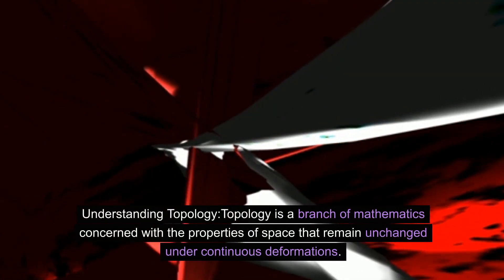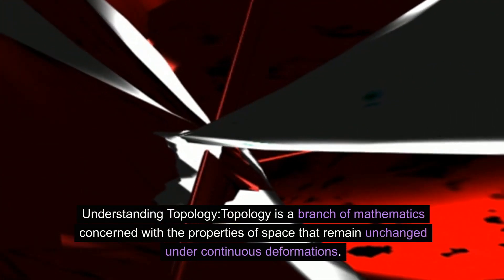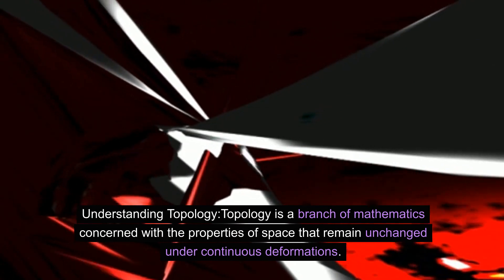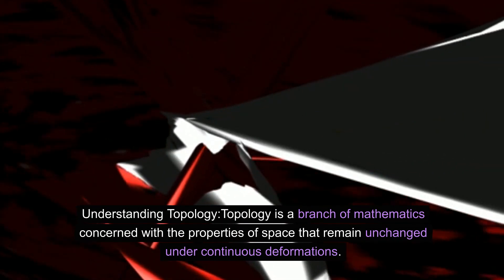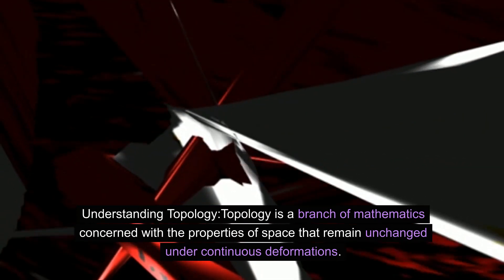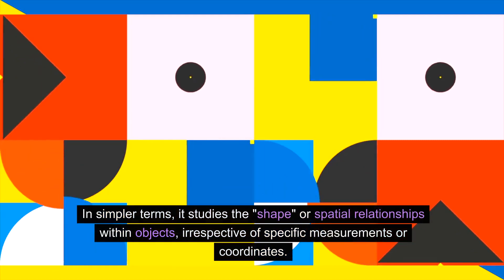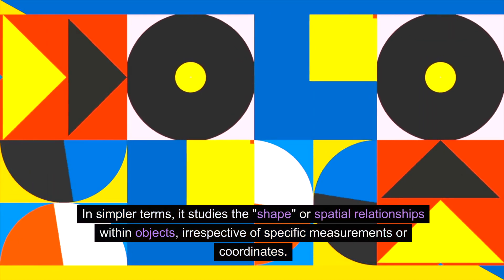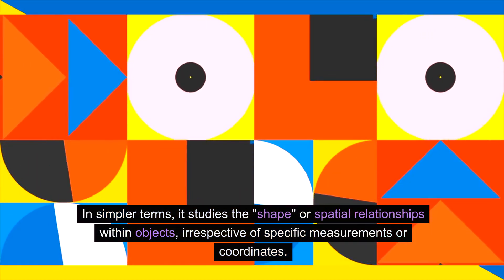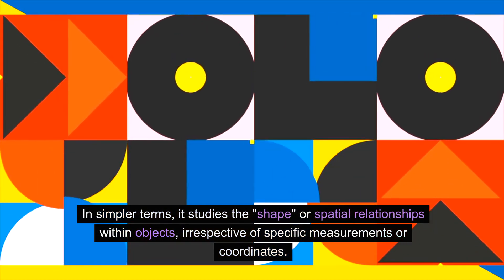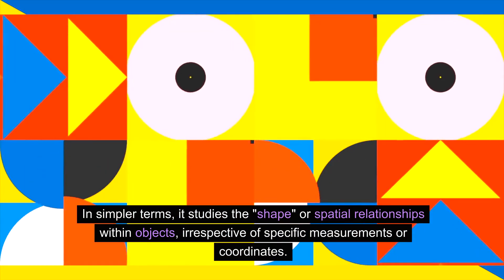Understanding Topology. Topology is a branch of mathematics concerned with the properties of space that remain unchanged under continuous deformations. In simpler terms, it studies the shape or spatial relationships within objects, irrespective of specific measurements or coordinates.